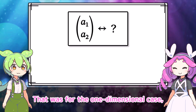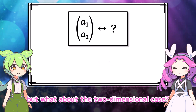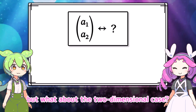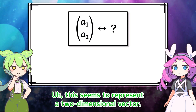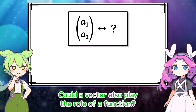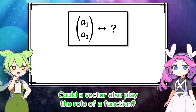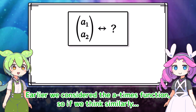That was for the one-dimensional case, but what about the two-dimensional case? This seems to represent a two-dimensional vector. Could a vector also play the role of a function? Earlier, we considered the a times function.